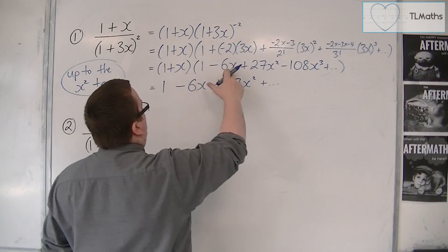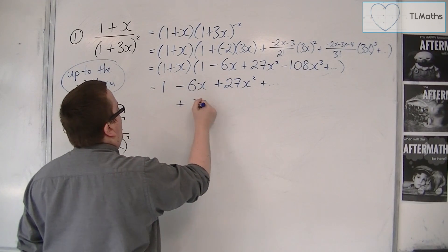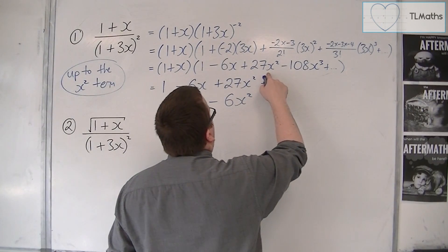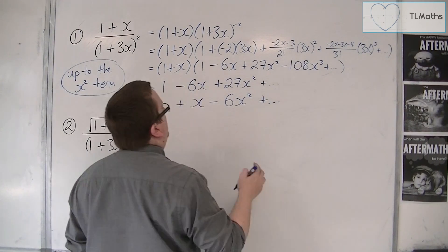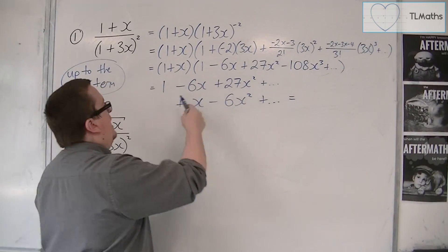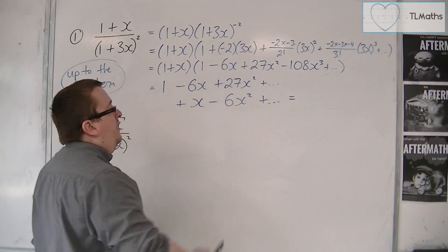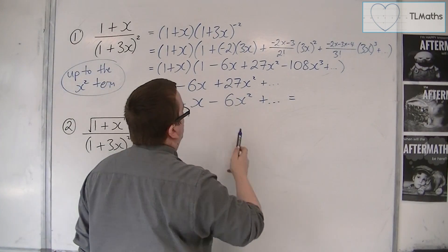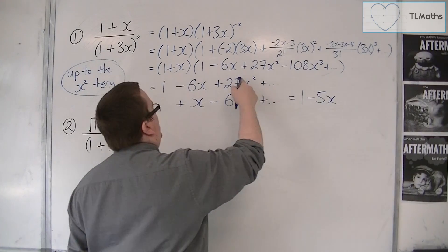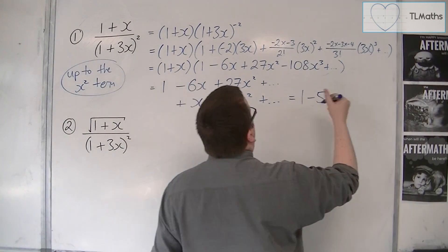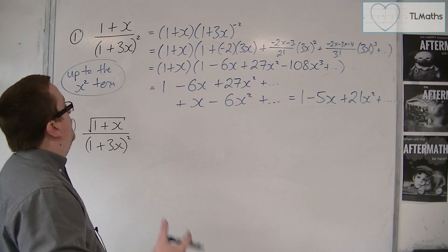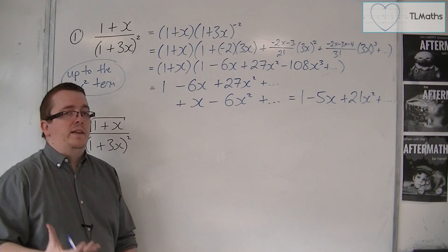Then the x gets multiplied by each of these terms: x times one is just x; x times minus six x is minus six x²; and x times 27x² is an x³, so I don't need that or anything beyond. Notice how I've written this in columns to keep track of the constant, linear, and quadratic terms. So I've got one, minus six x plus x giving minus five x, and then 27x² minus 6x², giving 21x². So the expansion up to and including the x² term is 1 − 5x + 21x².